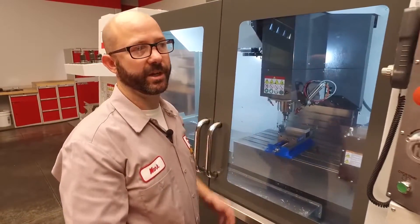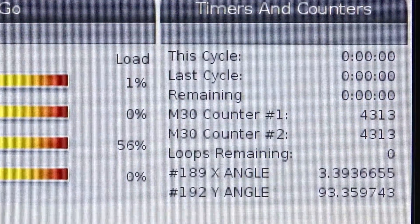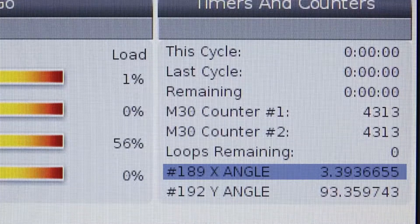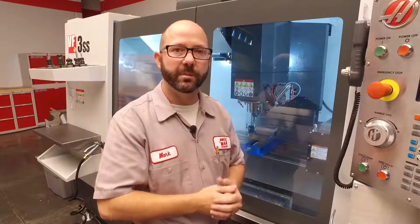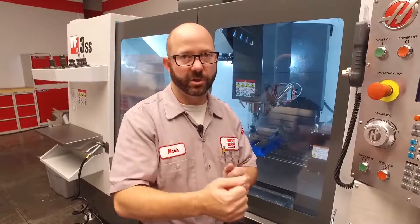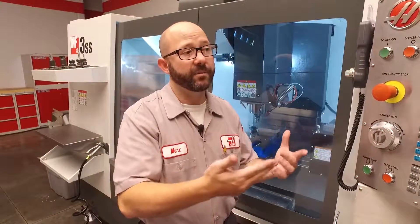Okay, so we've got some new numbers here. Looks like pound 189, my X-axis angle, is now at 3.394 degrees, while my Y-axis angle is at 93.359. We can take those angles and use them in a G68 rotation program or even just take that value and put it in as a B or C-axis work offset on our rotaries.